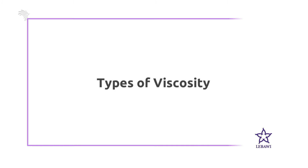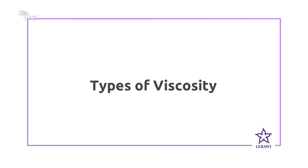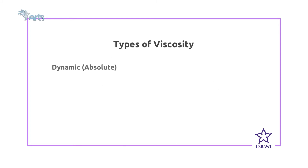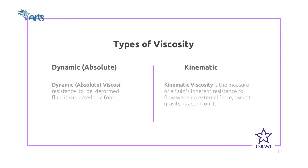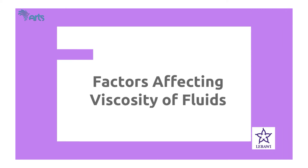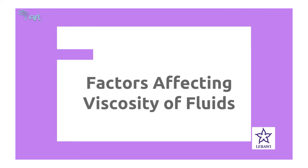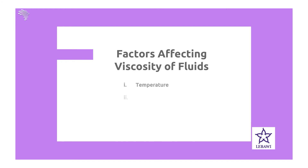There are different types of viscosity. Dynamic or absolute viscosity is the resistance to be deformed when a fluid is subjected to a force. Kinematic viscosity is the measure of a fluid's inherent resistance to flow when no external force except gravity is acting on it. Studies show that there are four basic factors that affect the viscosity of fluids: temperature, concentration, attractive forces, and particle size.